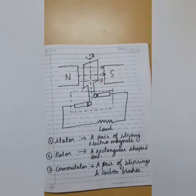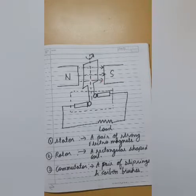The first part is known as Stator, the second part is Rotor and the third part is Commutator. Now as you can clearly see that the first part which is Stator means a pair of strong electromagnets so that we can produce a huge amount of magnetic field.